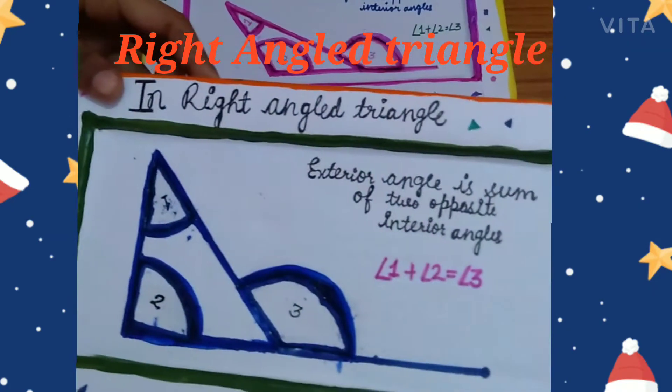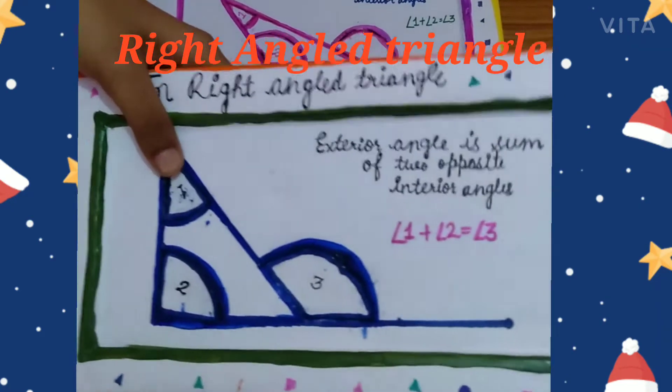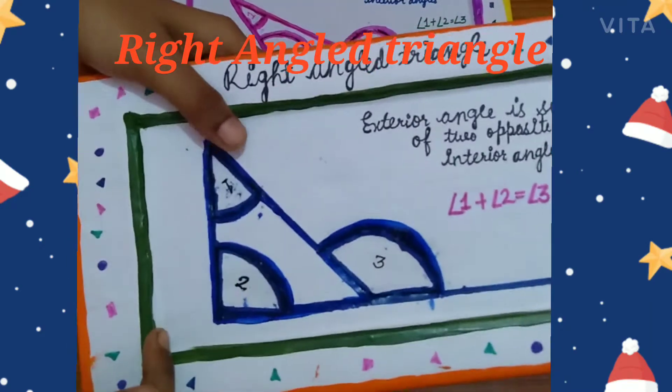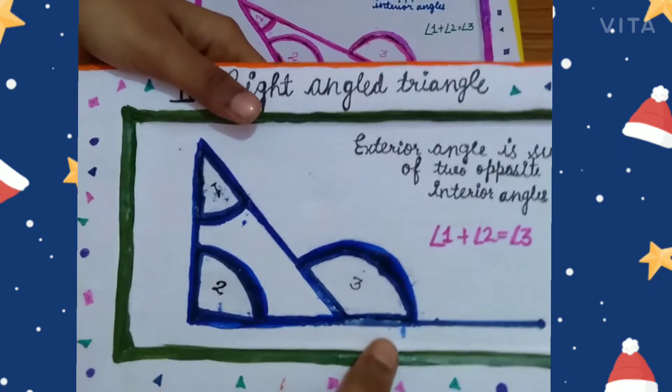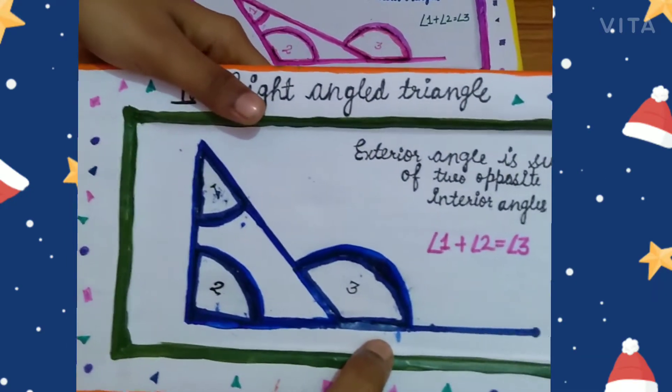In the right-angle triangle, these are interior angles and this is the exterior angle.